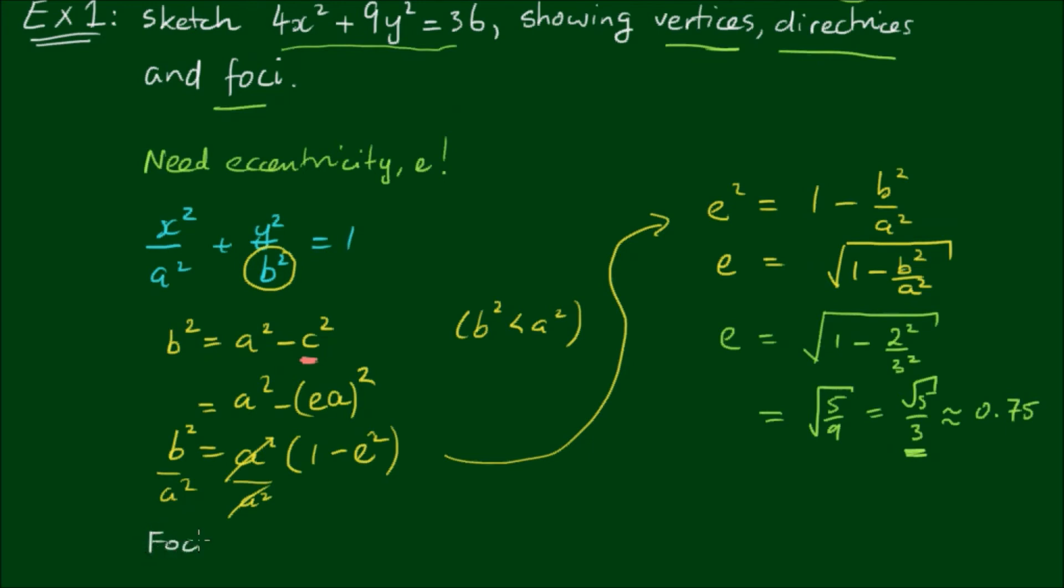So the foci are located at (ea, 0) and (-ea, 0), which equals... So the eccentricity √5/3 times 3 equals √5. So we have a focus at (√5, 0) and (-√5, 0).